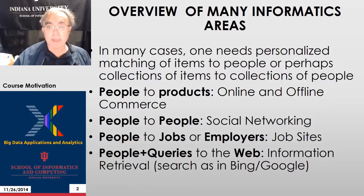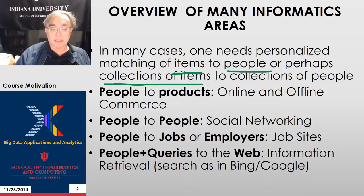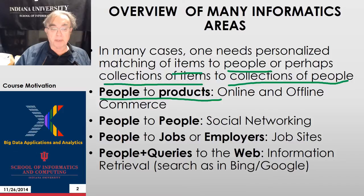If we look at many informatics areas, one needs some sort of matching of things. If we're doing purchasing, we want to take people and match items they can purchase. Maybe we don't have single items but collections of items or collections of people. For example, people to products — that's online and offline commerce.